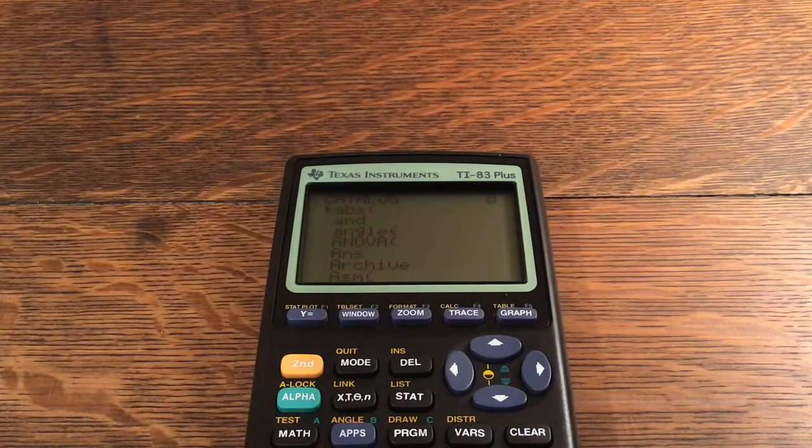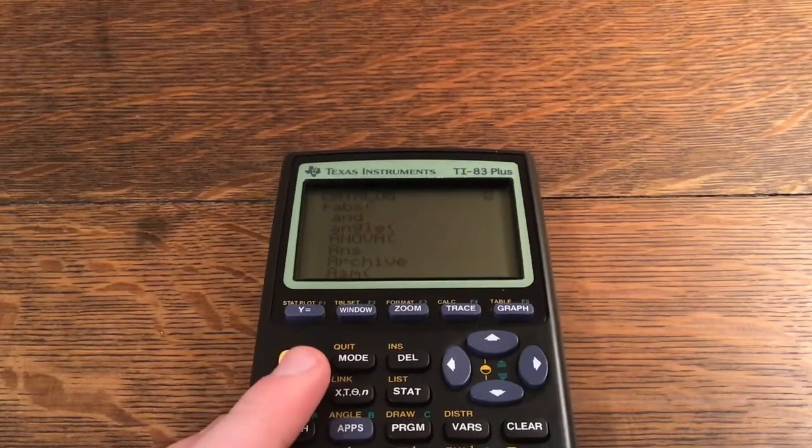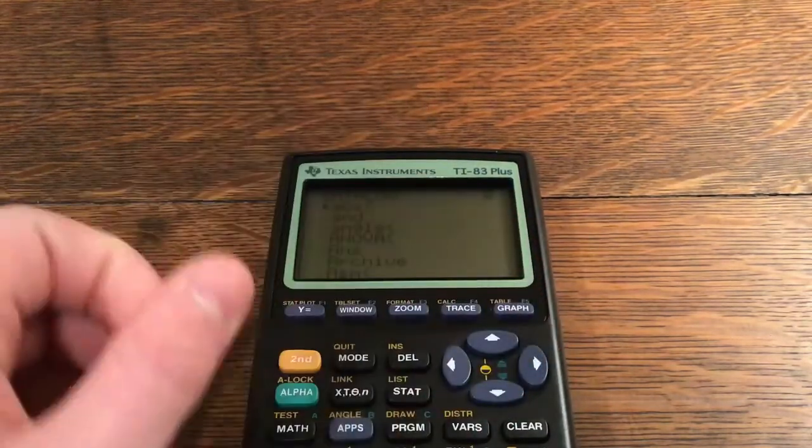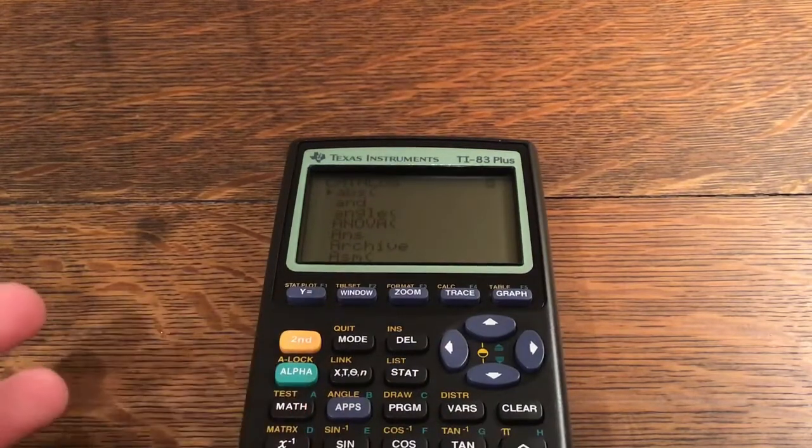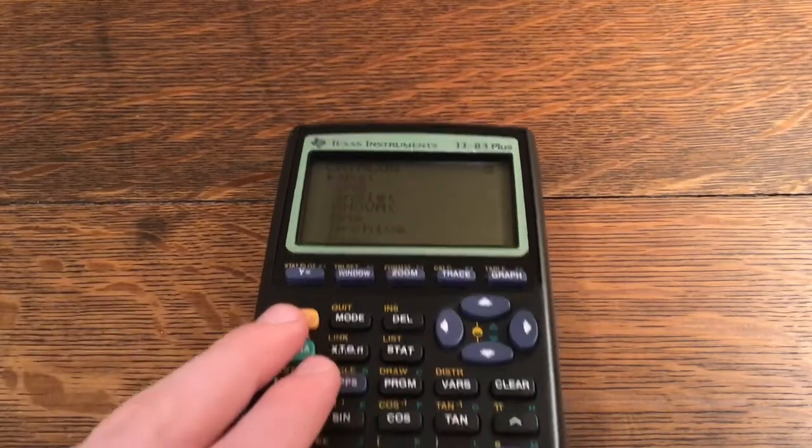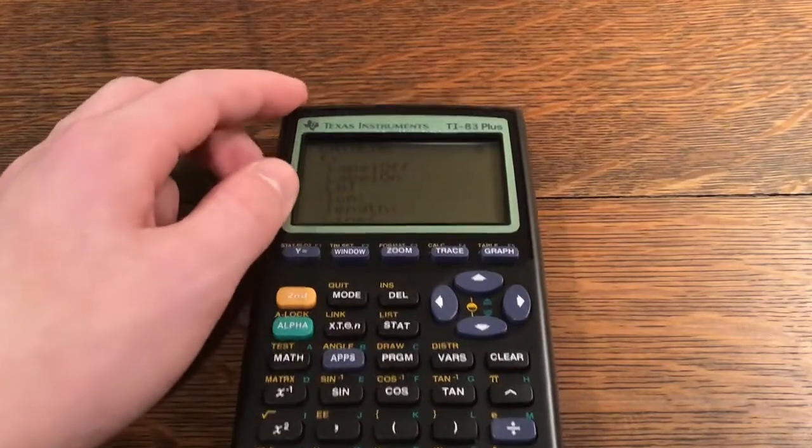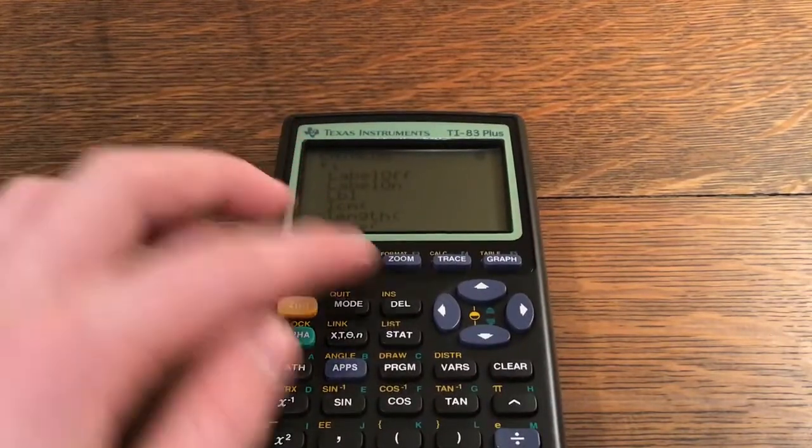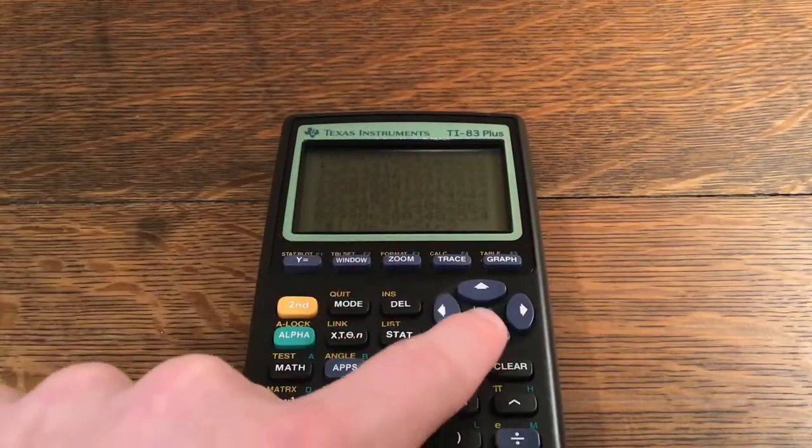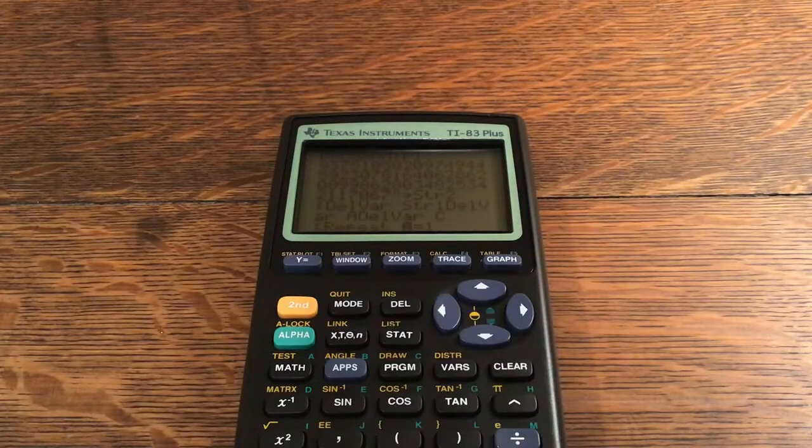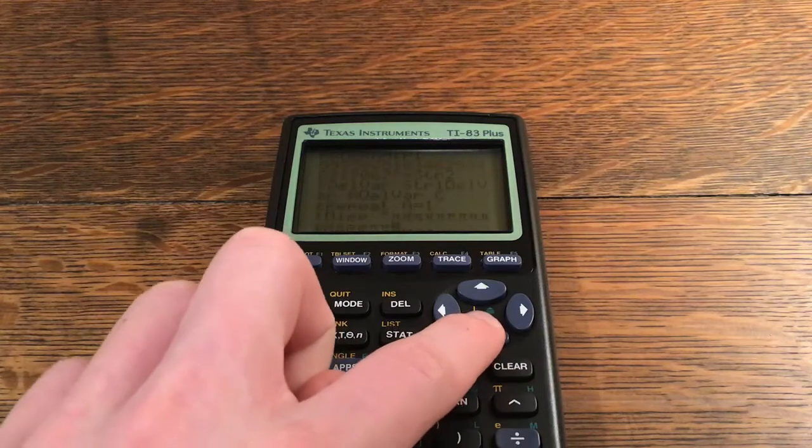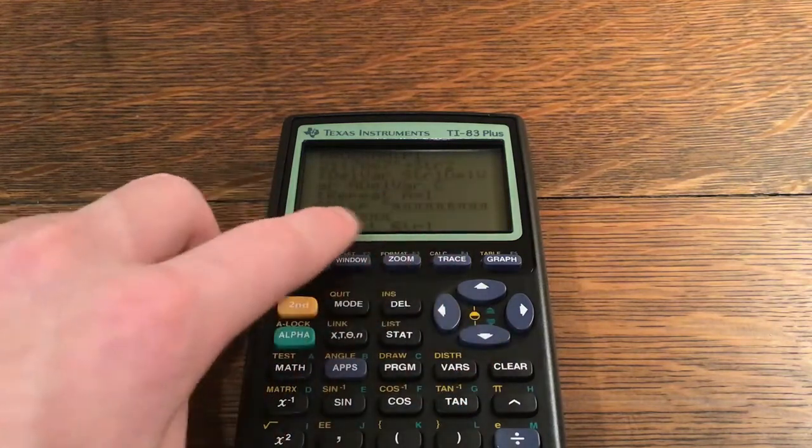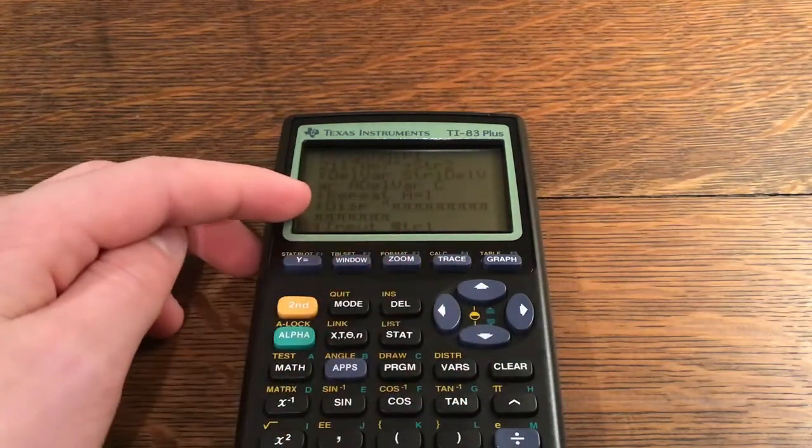But for the purpose of this video, I don't believe there's anything that you can't find in the catalog. Strings you cannot, so just use that vars key for those strings. So you'll use length. If you click L that'll take you down to the Ls, and as you can see, length is right there. Okay, so delvar string one, delvar a, and delvar c.